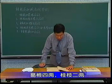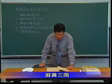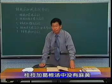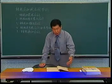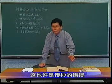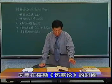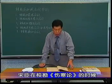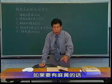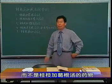打开讲义第二十二页。葛根四两，桂枝二两，芍药二两，生姜三两，甘草二两，大枣十二枚，麻黄三两。应当说桂枝加葛根汤中没有麻黄。原书为什么有麻黄呢？这也许是传抄的错误。宋臣在校定伤寒论的时候就在这条后面加了一段注：如果要有麻黄的话，这就是葛根汤的药物组成，而不是桂枝加葛根汤。